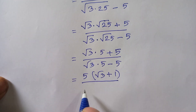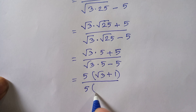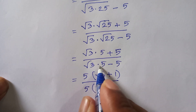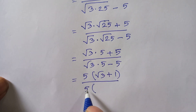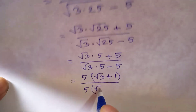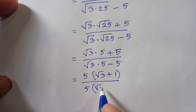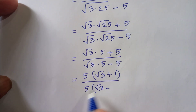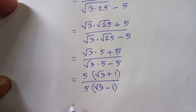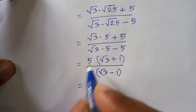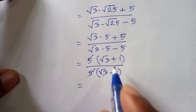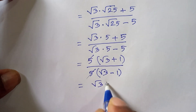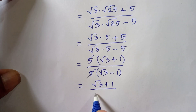Taking 5 out of the bracket in the denominator as well gives 5 times (root 3 minus 1). The 5 in the numerator and the 5 in the denominator cancel, so we are left with (root 3 plus 1) over (root 3 minus 1).